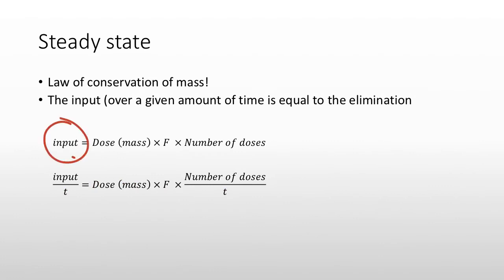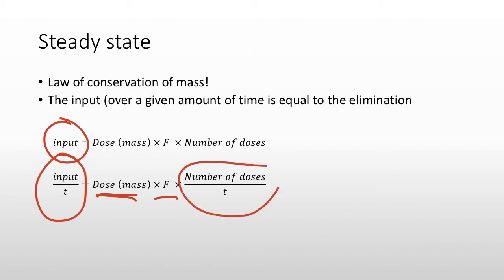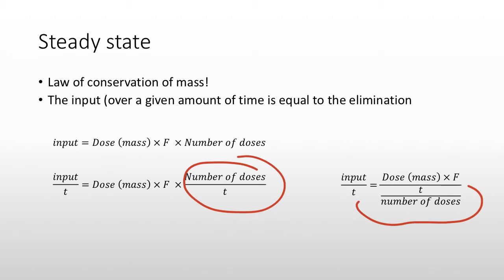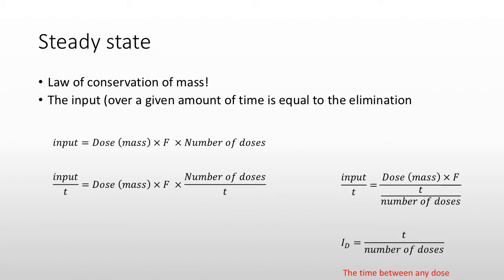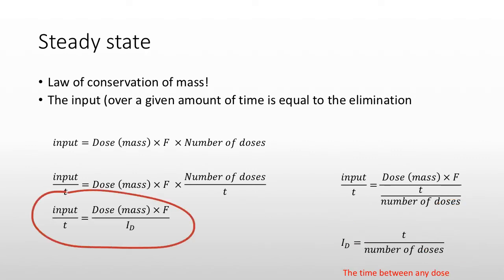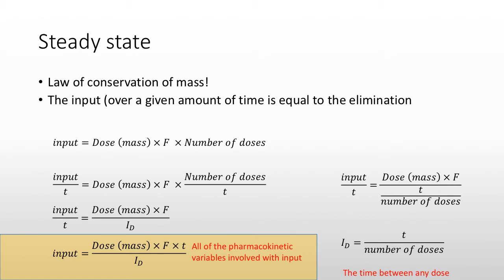If we want to know the rate of input, it equals the dose times the fraction times the number of doses over time. We can divide by the dosing interval — which is time divided by the number of doses. For example, over 24 hours giving 3 doses, the dosing interval is 24/3 = 8 hours. So: input rate = dose × bioavailable fraction / dosing interval.